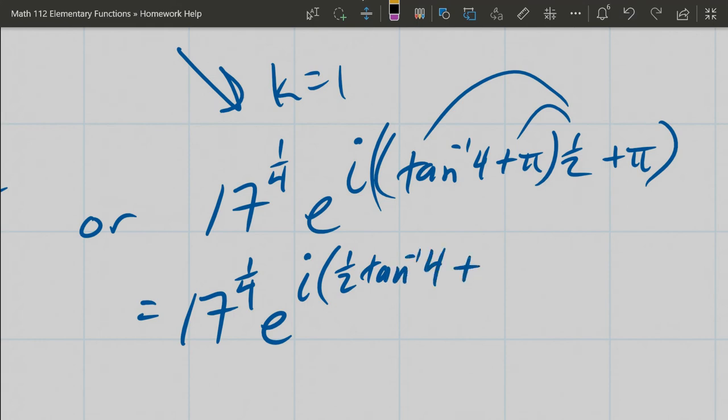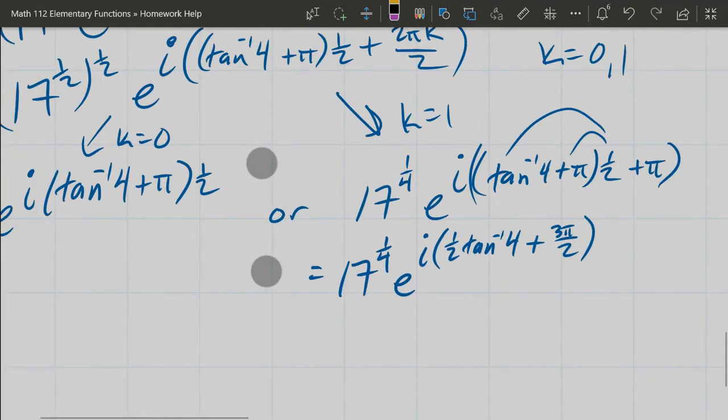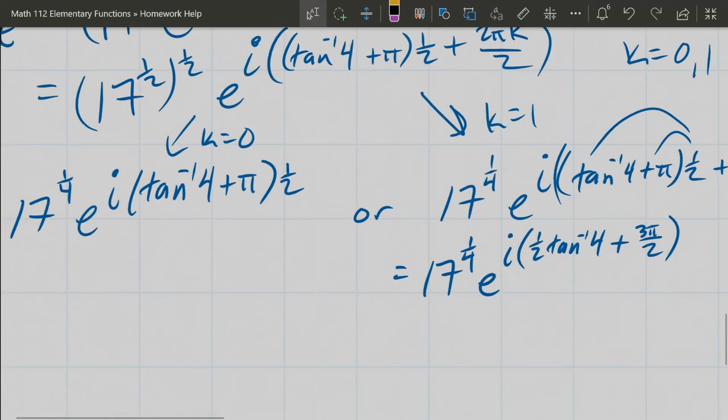So we got π/2 + 2π/2 is 3π/2. So that's our second answer.